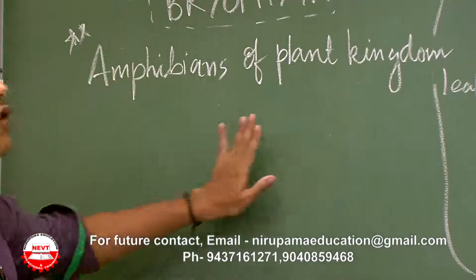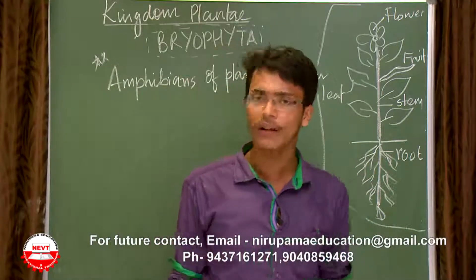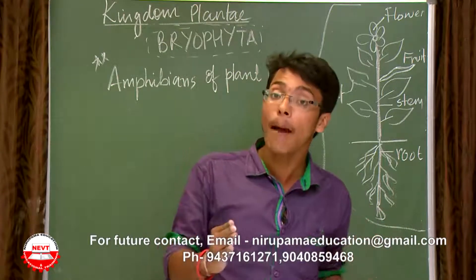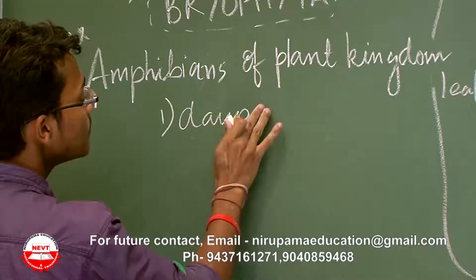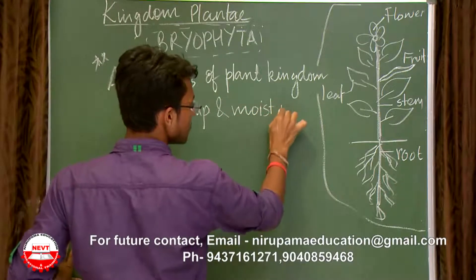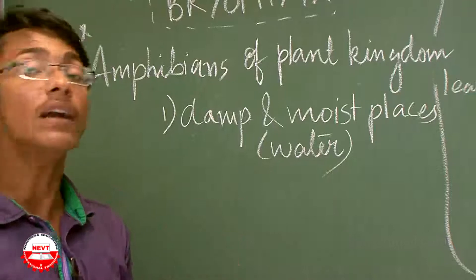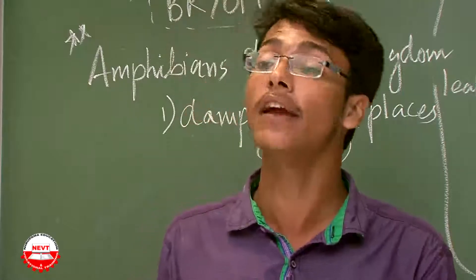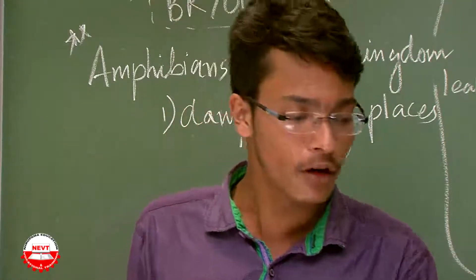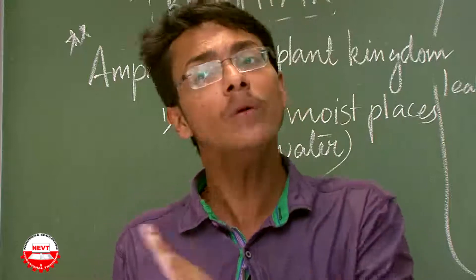Bryophytes are called amphibians of the plant kingdom. The term 'amphibian' refers to animals which require both land and water for their survival. Bryophytes are found in damp and moist places where there is presence of water. They need land for normal living — they need soil for nutrients and air for sunlight.